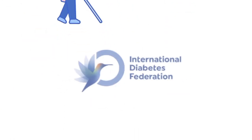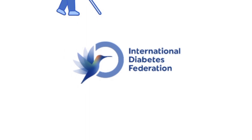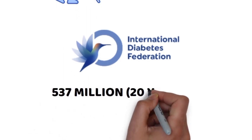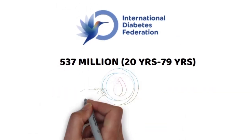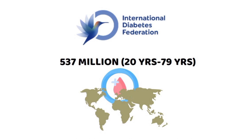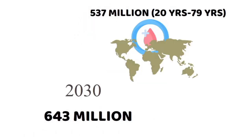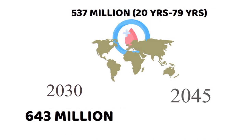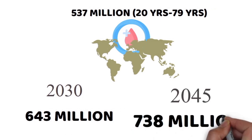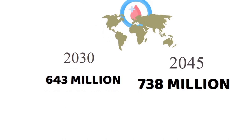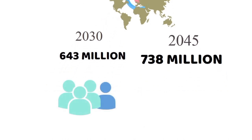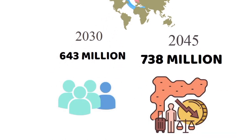The International Diabetes Federation reports that approximately 537 million adults are currently living with diabetes globally. By 2030, this number is projected to rise to 643 million, and by 2045, it could reach 783 million. Three out of four adults with diabetes reside in low- and middle-income countries.